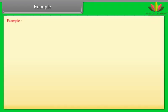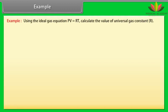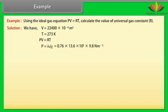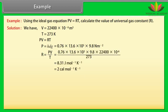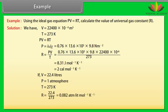Example. Let's take an example of kinetic theory of an ideal gas. Using the ideal gas equation PV is equal to RT, calculate the value of universal gas constant. Let's see the solution. We have V is equal to 22400 into 10 to the power minus 6 meter cube, T is equal to 273 Kelvin, PV is equal to RT, P is equal to HDG. Now we calculate value of R by putting the values. R is equal to PV by T is equal to 2 calorie per mole per Kelvin. If V is equal to 22.4 liters, P is equal to 1 atmosphere, T is equal to 273 Kelvin, R is equal to 0.082 atmosphere liter per mole per Kelvin. Hence the value of universal gas constant is 0.082 atmosphere liter per mole per Kelvin.